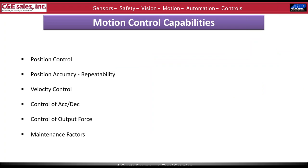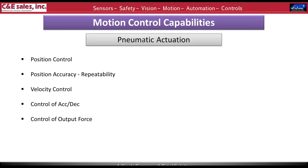Taking a deeper dive into motion control capabilities, I'll break that down into: position control capability, position accuracy and repeatability, velocity control, control of acceleration and deceleration, and control of output force. I'll also discuss maintenance factors a little later. To dive in, we'll begin with pneumatic actuation.